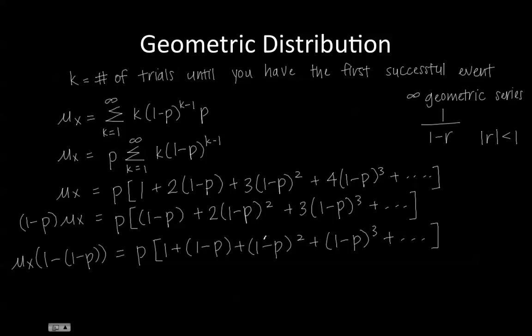And since P is a probability, we know that 1 minus P is always going to be less than 1.